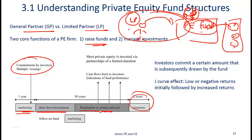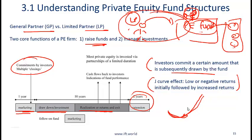Typically the life of the overall fund is 10 years, sometimes extendable for a year or two, and within that several investments are made. The first set of investments might last 4 to 5 years, then another set also lasting 4 to 5 years. Two points to note: first, investors commit a certain amount that is subsequently drawn by the fund. The second important term is the J-curve effect: in private equity, investors should keep in mind that initially there are likely negative returns, and only in the relatively long term will there be positive — and hopefully substantially positive — returns, making the shape look like a J.